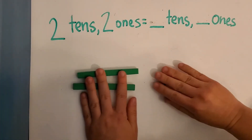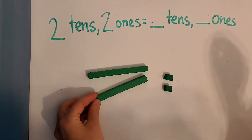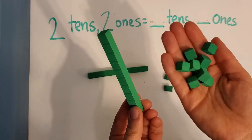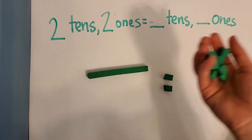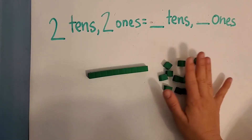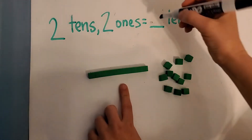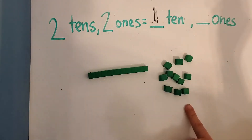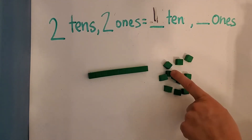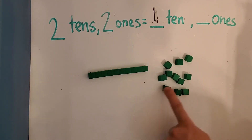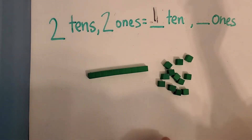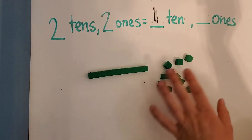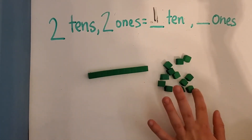Now let's regroup one ten rod as ten ones. Here are my ten ones. Here's my ten rod. We're going to trade — I'm going to take away my ten rod and bring the ten ones, so it's an even fair trade. So now how many tens am I left with? One ten, right. And then how many ones do I have now? One, two, three, four, five, six, seven, eight, nine, ten, eleven — wait, I should have twelve. So let's take a look again. I had two ones and then I added ten more, which gives me one, two, three, four, five, six, seven, eight, nine, ten, eleven, twelve ones.